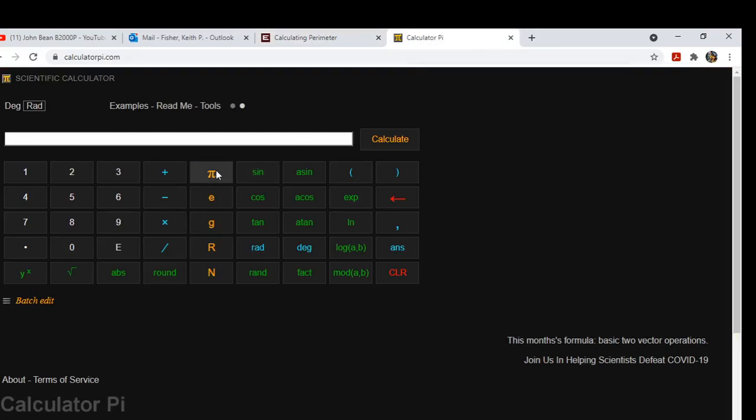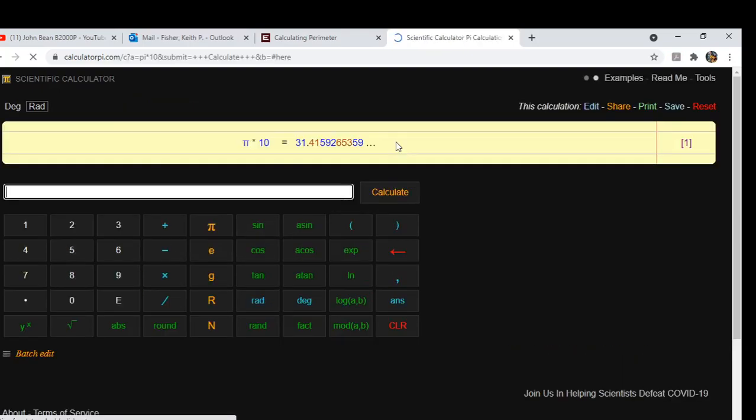And we're going to times pi times 10, calculate, and we see here it's 31.415.